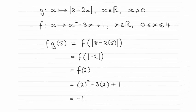Hi there, so for this part of the question we were given the two functions g of x and f of x and asked to work out the composite function fg of 5 and as you can see it turns out to be minus 1.